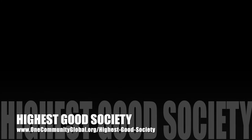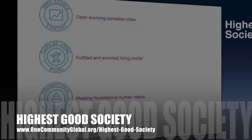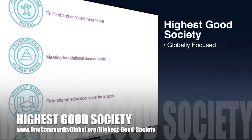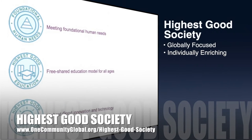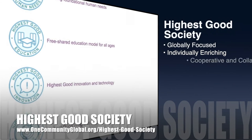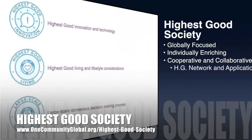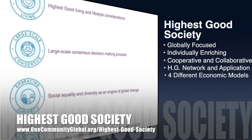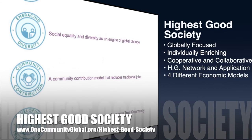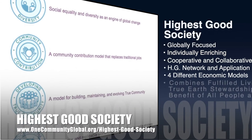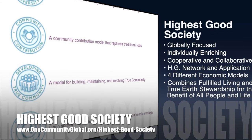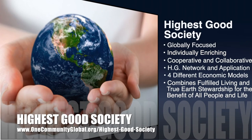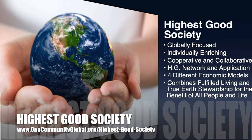One Community's approach to highest good society is globally focused, individually enriching, cooperative and collaborative. It includes a highest good network and application, four different economic models, and combines fulfilled living and true earth stewardship for the benefit of all people and all life on this planet.